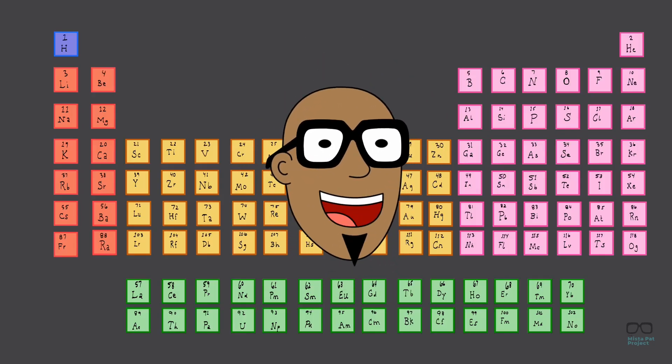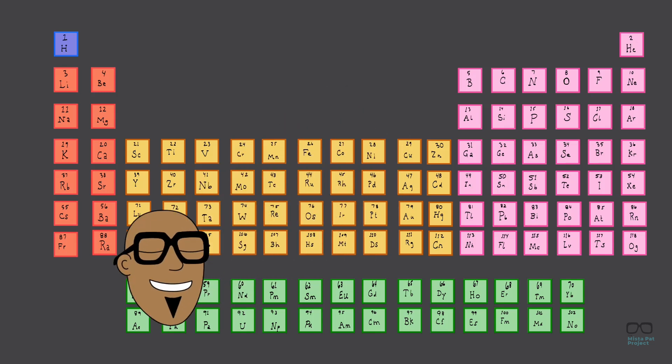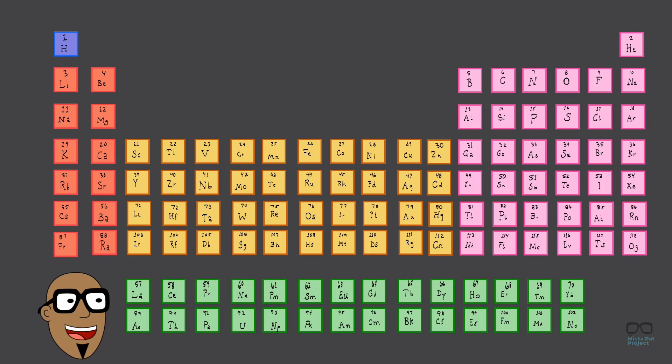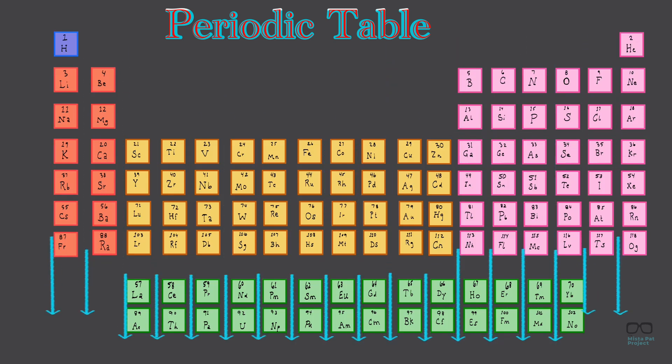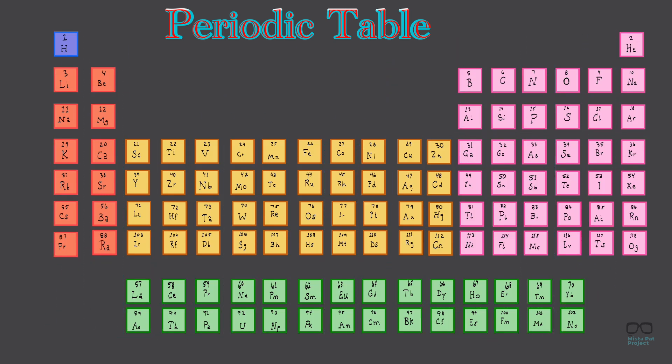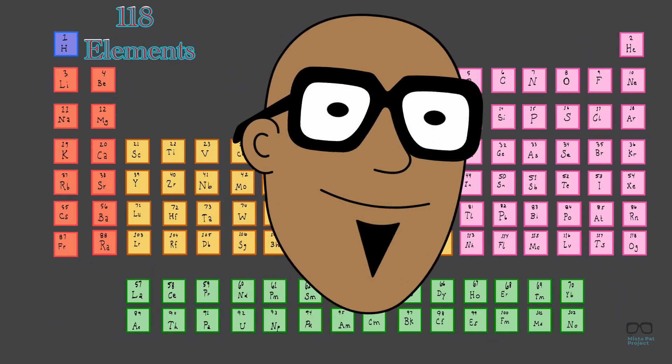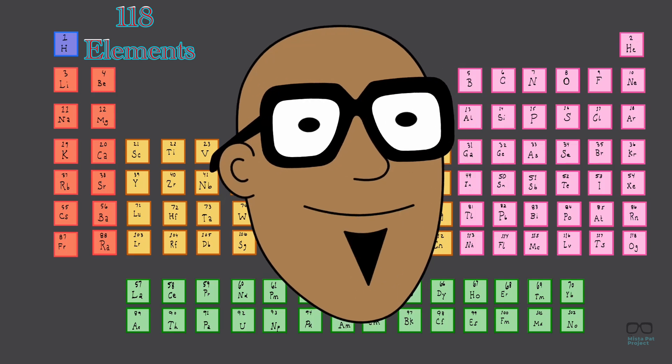Hey there, family. I'm super excited today to check out our new table. It's not a table we eat or draw on, though. This is called the periodic table, and it's a set of rows and columns organized by different chemical elements. 118 elements to be exact. Whoa!